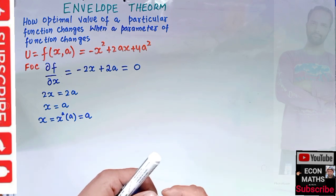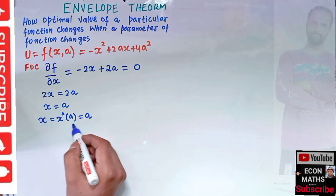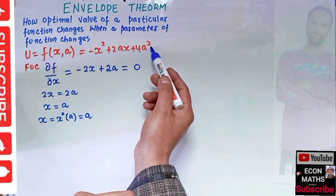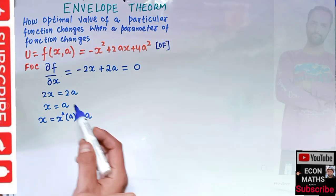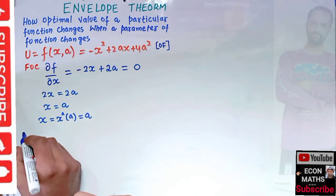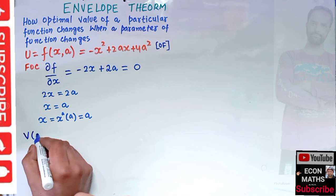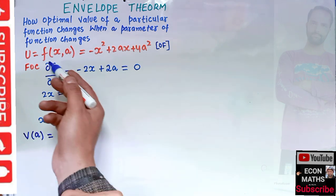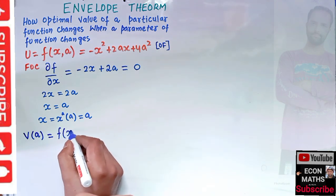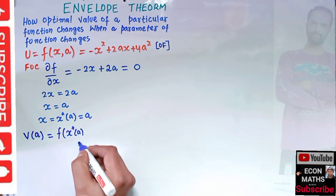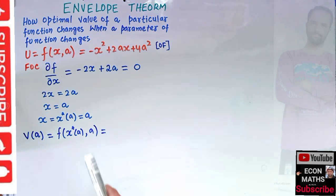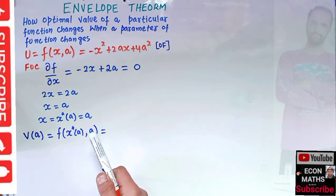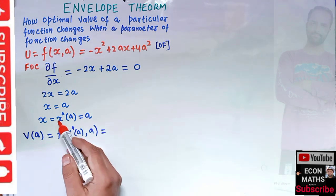Now if we take this critical value and plug it back into the objective function, we get what we call the optimal value function — or indirect objective function — denoted V(a). This equals f(x-star(a), a).